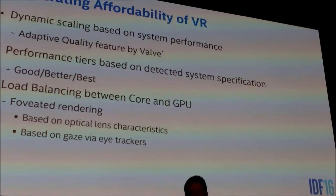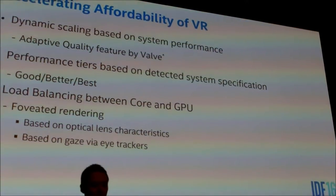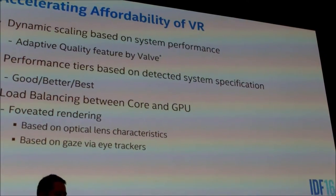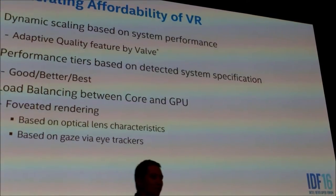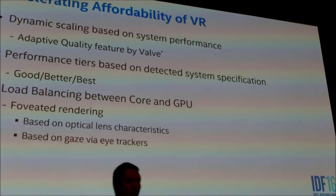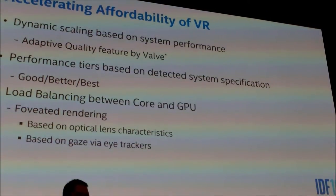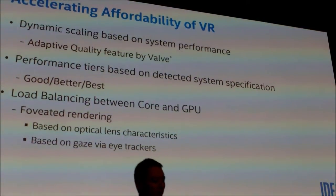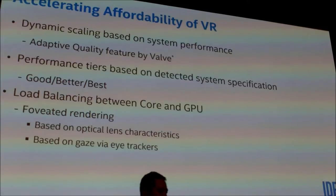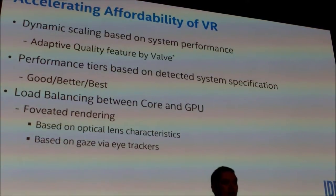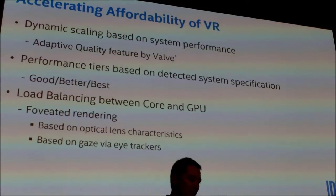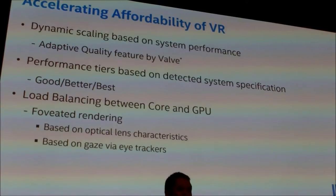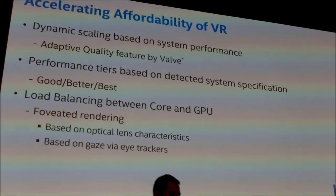When we talk about the scalability of content in mainstream VR experiences, a good example is the adaptive quality feature introduced by Valve. This allows for runtime scaling of things like your render target resolution and MSAA configuration, and that really helps avoid dropping frames. If your system is not able to perform well, it keeps track of how much of your GPU is being used and allows your quality to adapt to maintain key performance indicators such as frame rates and latencies.